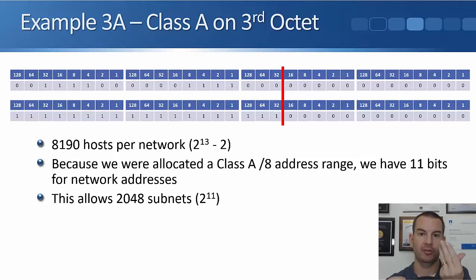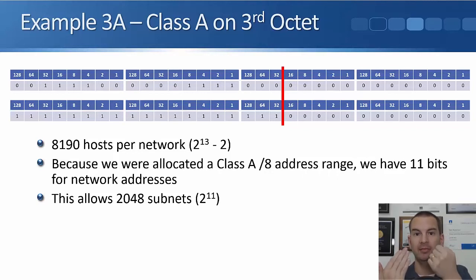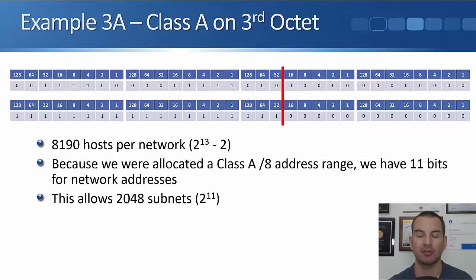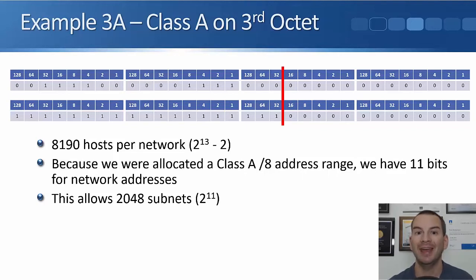2 to the power of 13 is 8,192, minus 2 gives us 8,190 hosts per network. Because we were allocated a class A /8 range, the difference between /8 and /19 is 11 bits. So the number of networks is 2 to the power of 11. We already know 2 to the power of 10 is 1,024, so doubling that gives us 2,048 subnets.